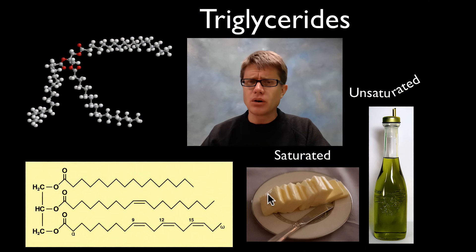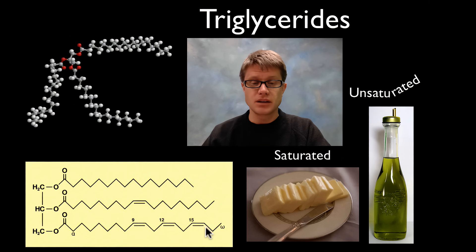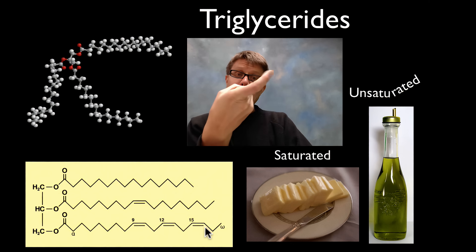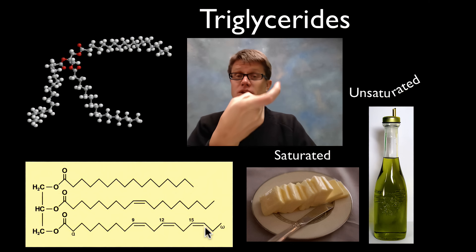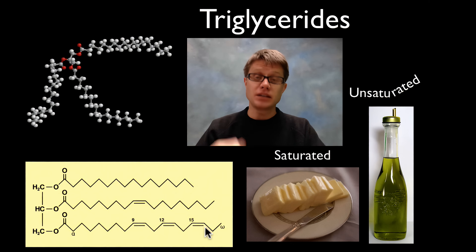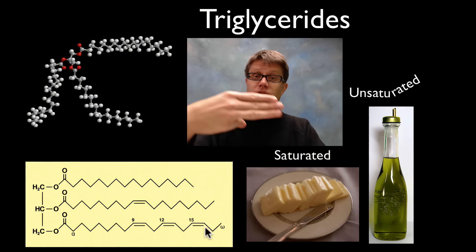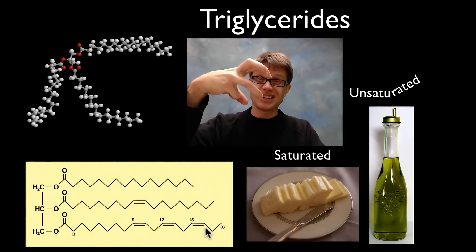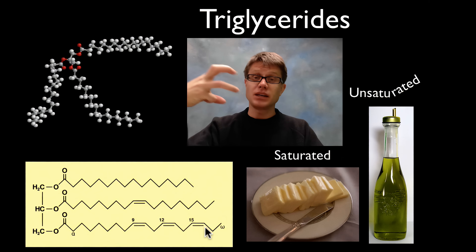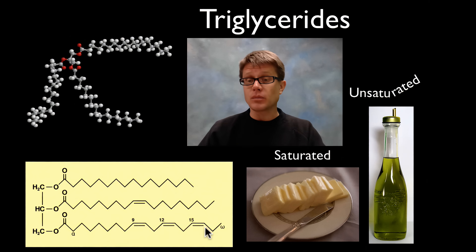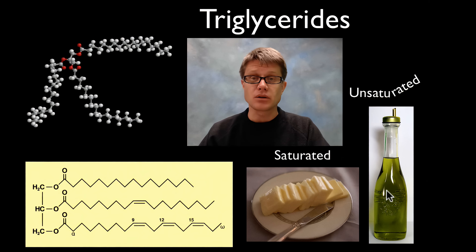What happens if you don't have hydrogen all the way around the outside? You're going to form double bonds, and basically what that does is put a bend in your tail — you're going to have a kinky tail. If you're a saturated fat you're going to look straight; if you're an unsaturated fat you're going to have those kinky tails. The kinky tails can't quite pack together, so normally fats that are unsaturated are going to be a liquid at room temperature.